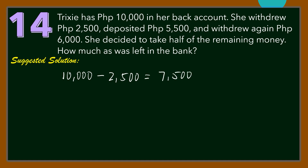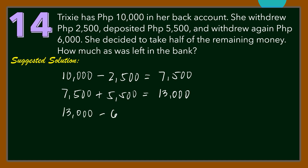After that, she deposited 5,500, so we have 7,500 plus 5,500, which is 13,000 pesos. Then she withdrew again 6,000 pesos: 13,000 minus 6,000 equals 7,000 pesos. After that, she decided to take half of the remaining money, so 7,000 divided by 2 is 3,500 pesos.